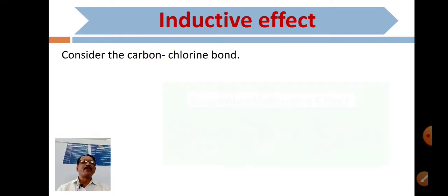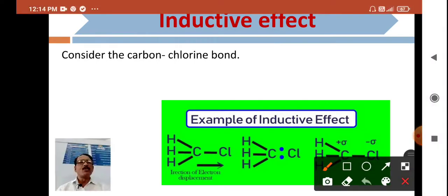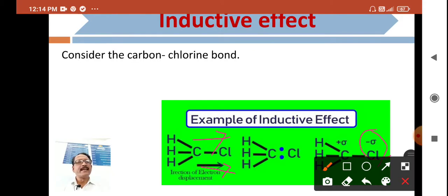Consider the carbon-chlorine bond. Chlorine is more electronegative here, so it has a delta negative charge and carbon has a delta positive charge. The bonding electrons are going towards chlorine; therefore, chlorine is negatively charged and carbon is positively charged.